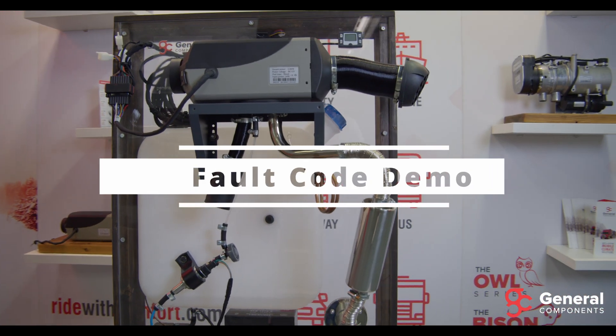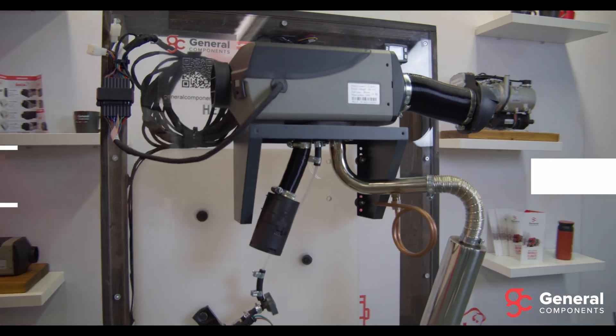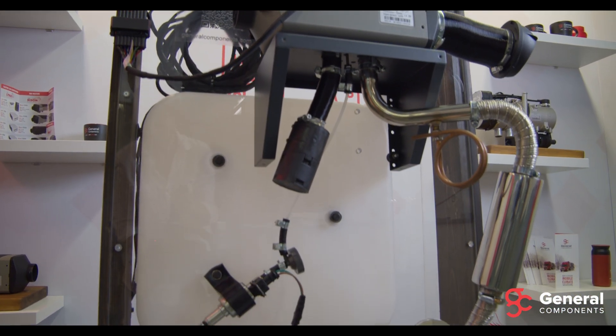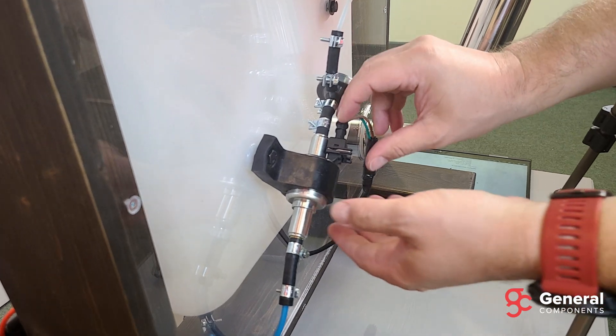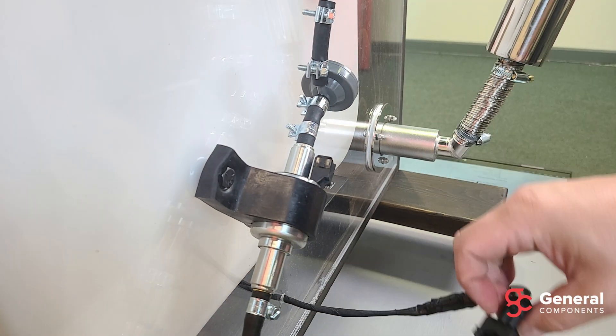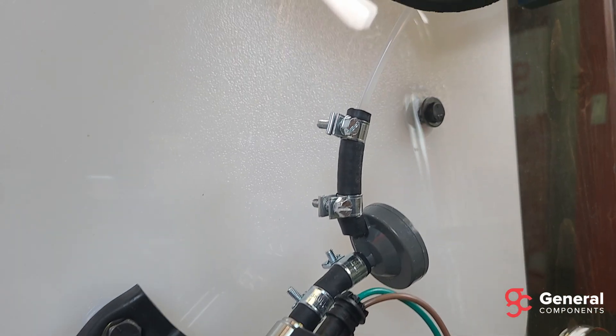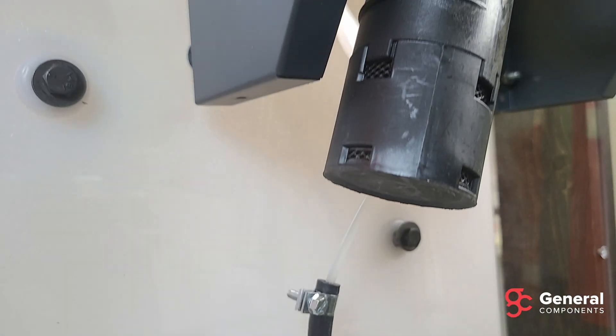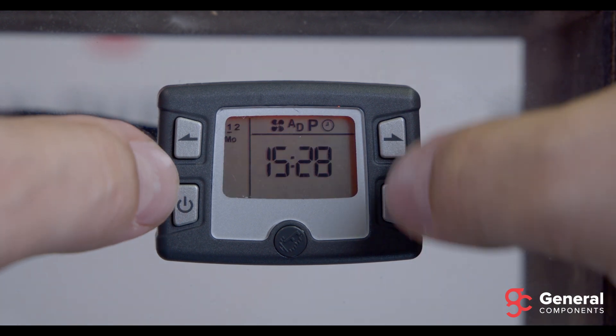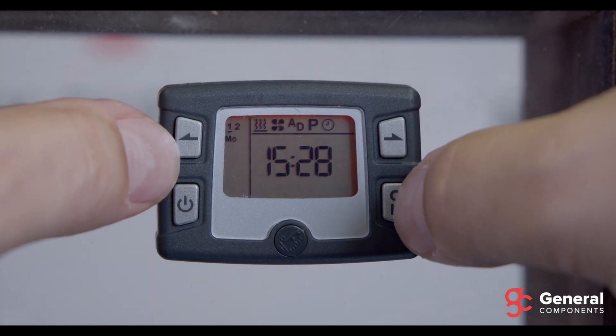Alright guys, so now we're going to demonstrate the reading of fault codes. And we're going to try to produce a fault code by disconnecting the fuel pump harness. When we turn on the timer and try to turn on the heater, let's wake it up and navigate to the heat mode and hit OK. Now let's turn on the heater.